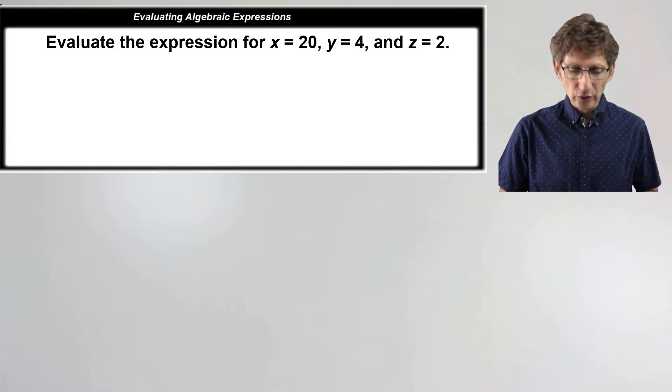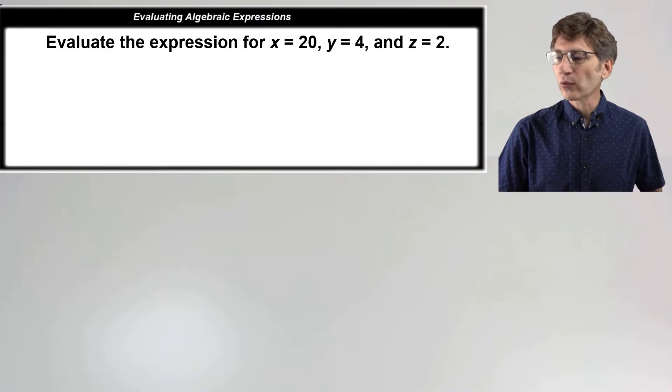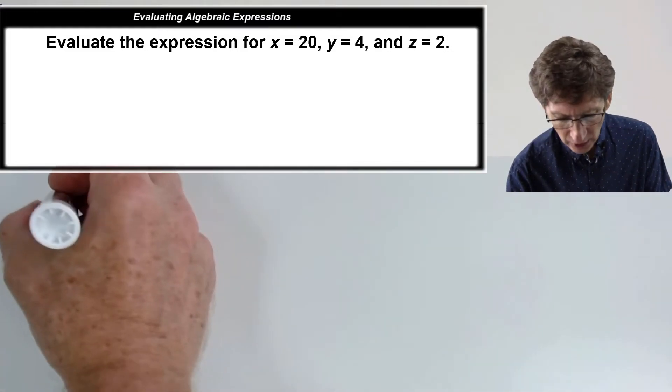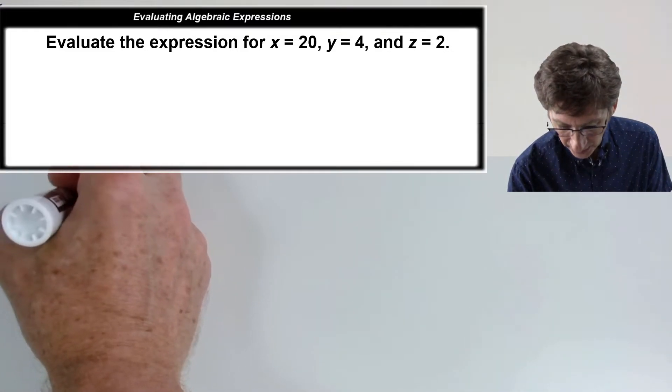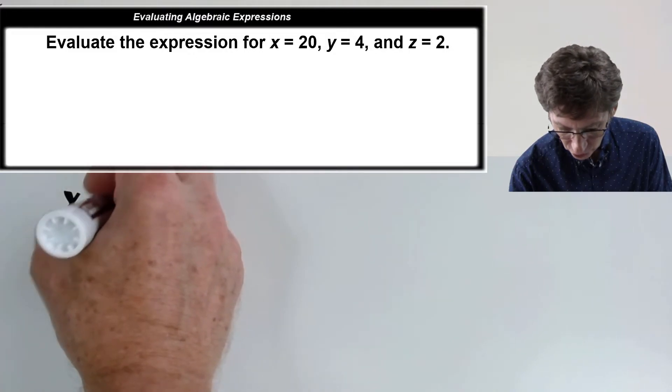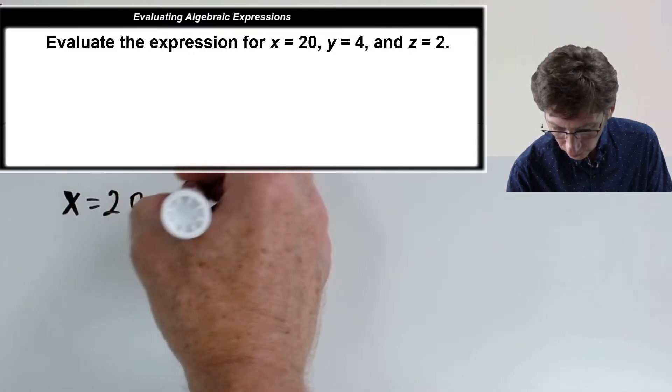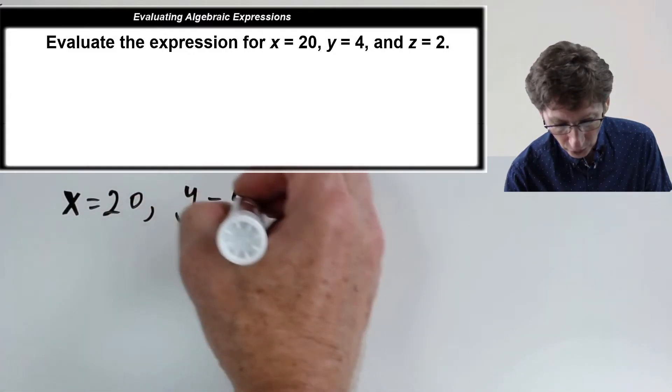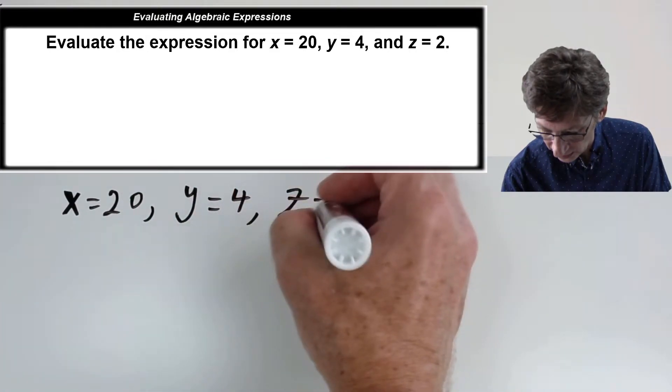So I'm going to start just by writing down those values so I don't lose track of what they are. x equals 20, y equals 4, z equals 2.